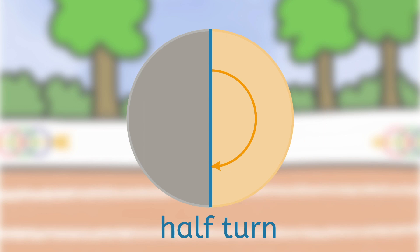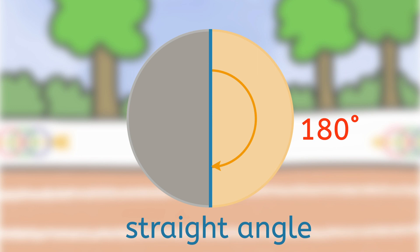A half turn is 180 degrees. It's also called a straight angle.